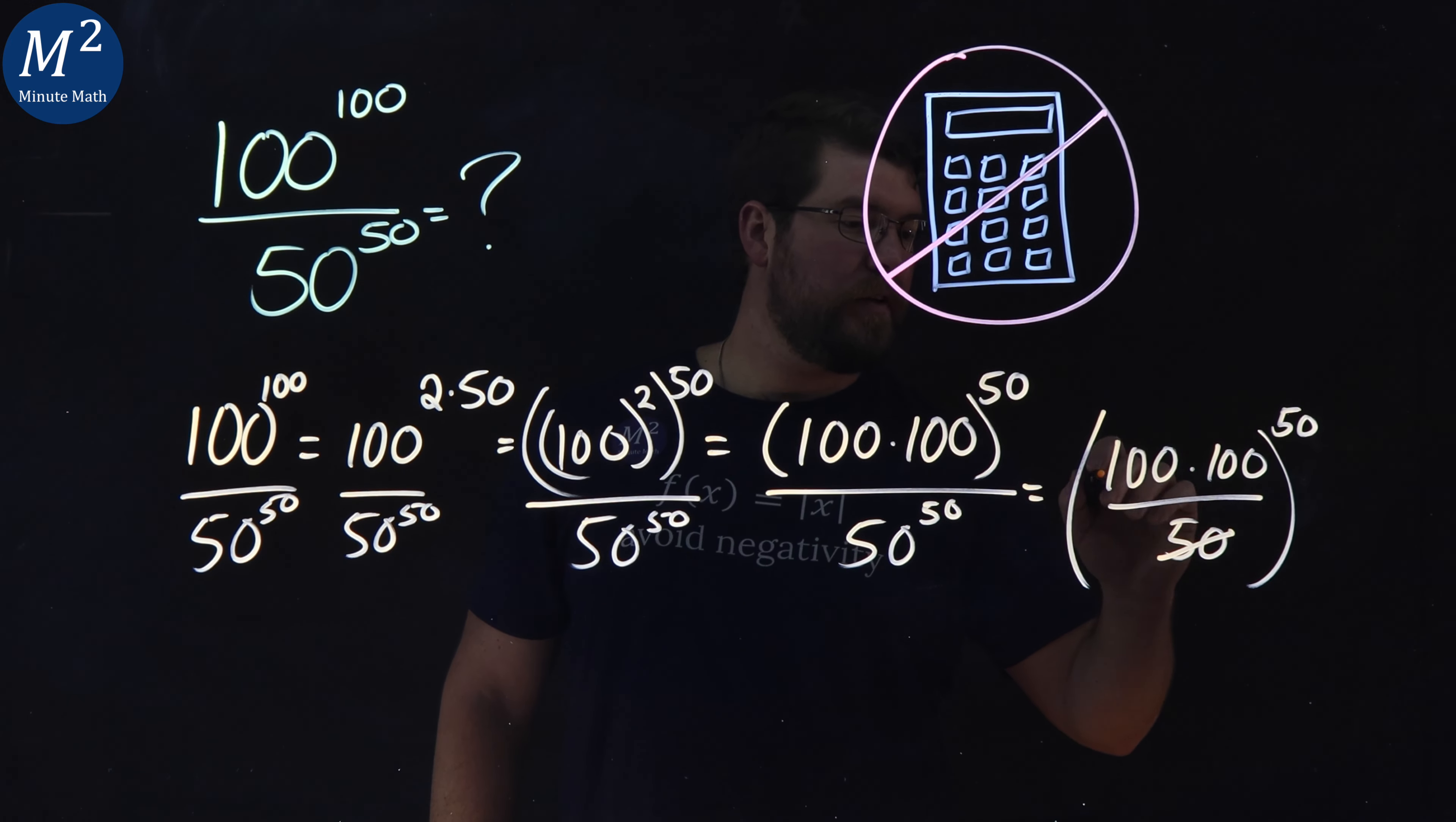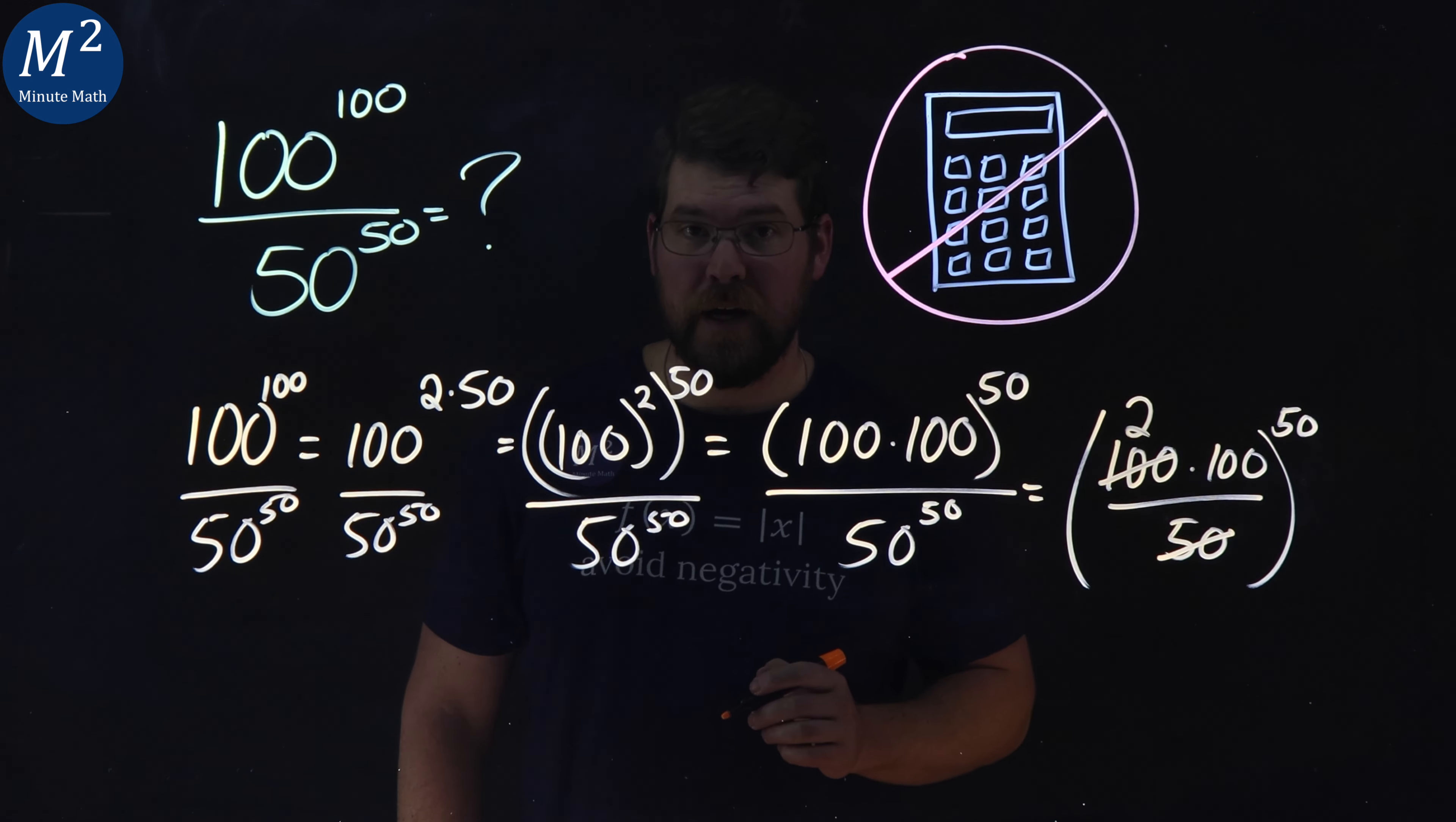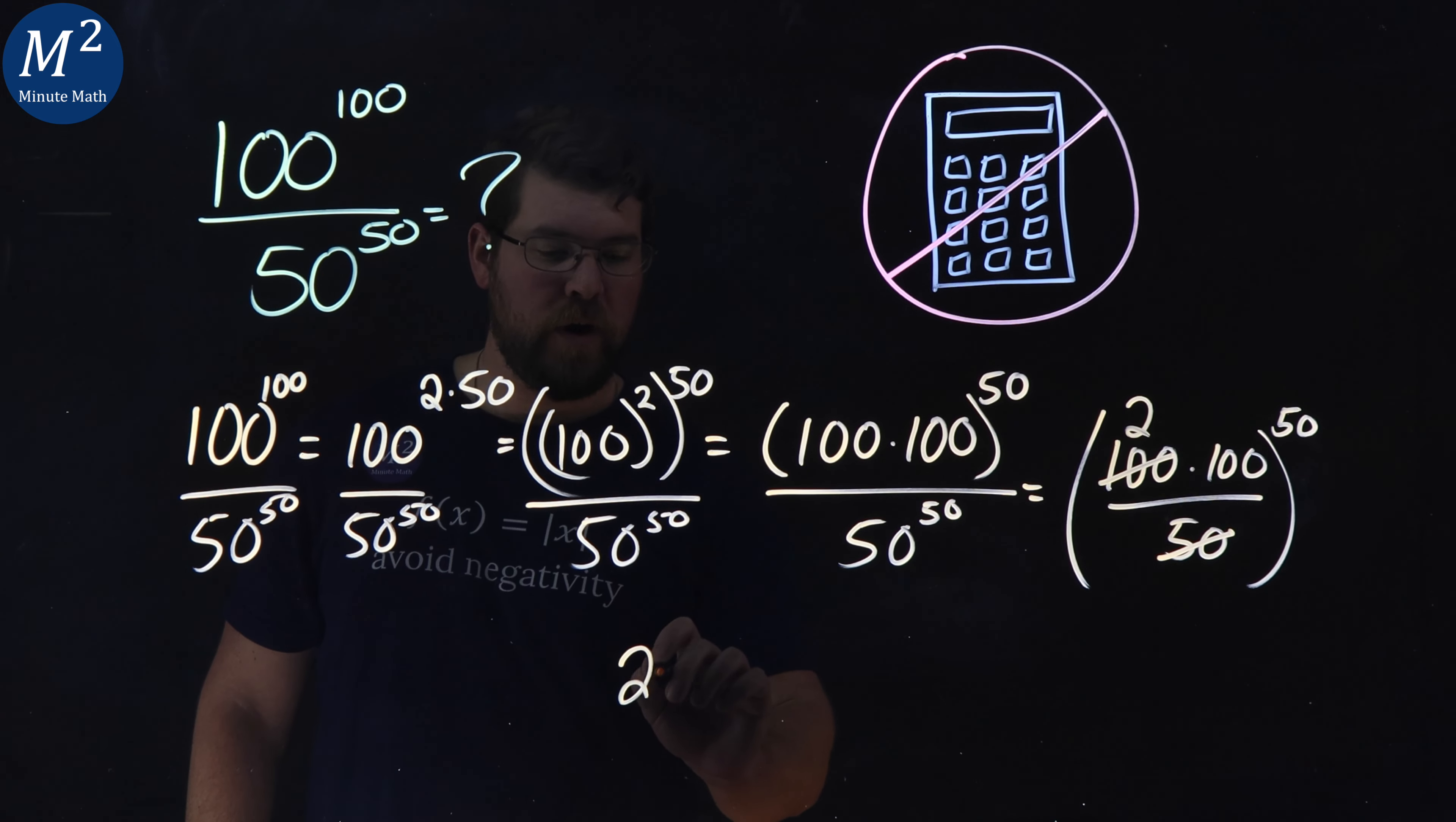From there, 50 goes into 100 two times. And 2 times 100 is 200 to the 50th power.